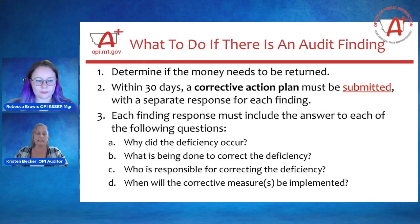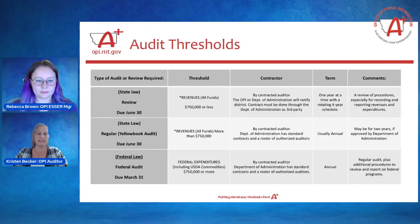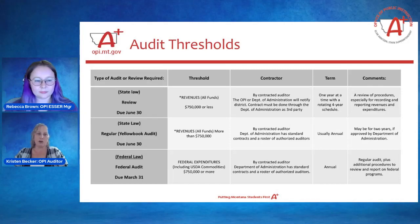You'll find that Rebecca kindly put a link in the slides that you'll be receiving. That link will take you to the portal to submit those corrective actions to local government services. Level of audit criteria: this is where the ESSER funds may change your level of audit criteria and the type of audit that you're required to have.